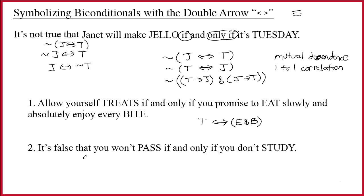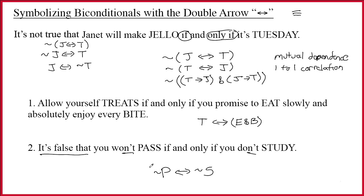Sentence two is another 'if and only if,' so we get a double arrow — but this one has three negations: 'it's false that,' 'won't,' and 'don't.' The easiest thing to do is start with 'you will pass if and only if you study,' and then go back and put the three tildes where they belong. We've got one on pass (won't pass), one on study (don't study), and then 'it's false that' typically goes outside parentheses.